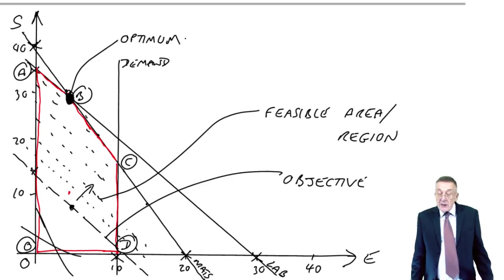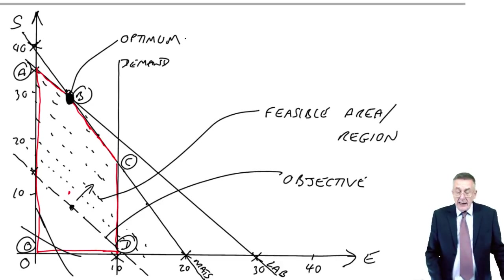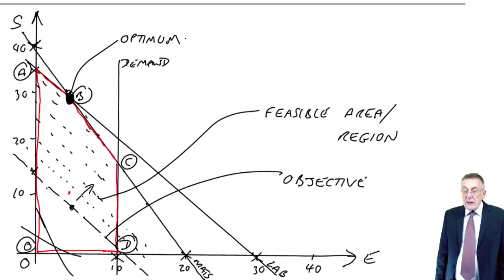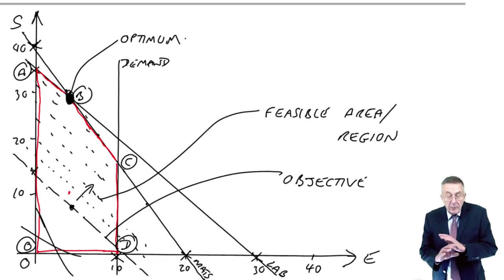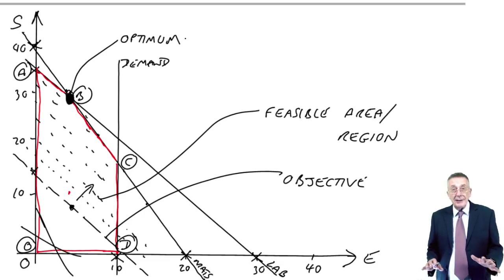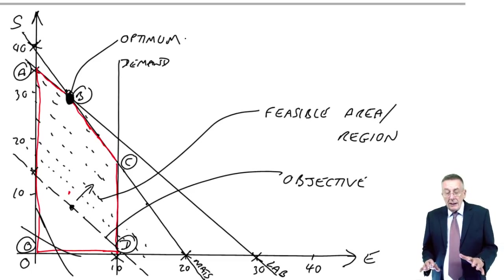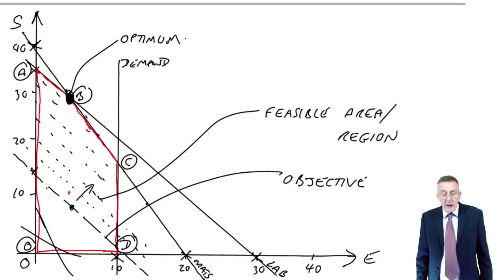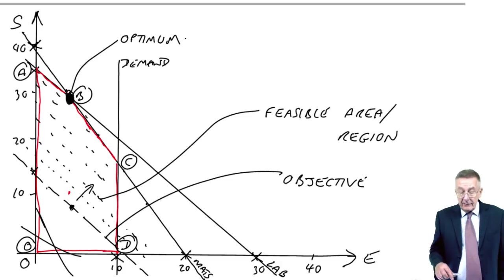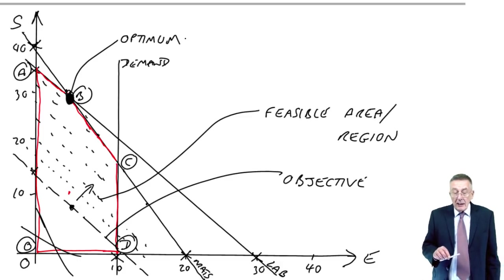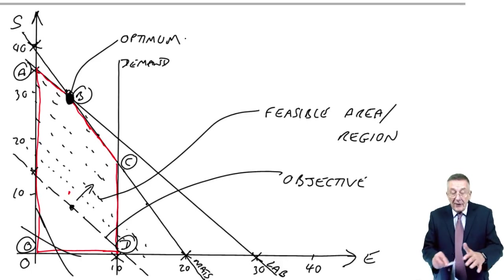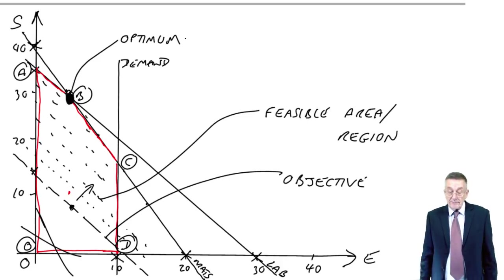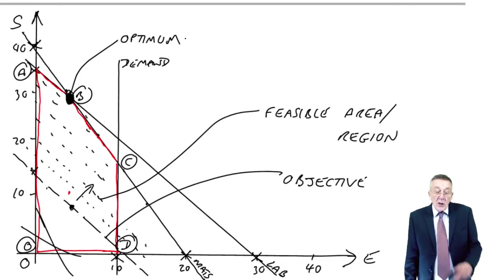And I did say in I think the last lecture that it's extremely unlikely these days that you could be asked to draw the graph. But there have been cases where you've been given this graph. But it's there in front of you. And they've drawn the objective function. But they're testing that you know that we need to move it out, keeping it parallel and find the best corner.